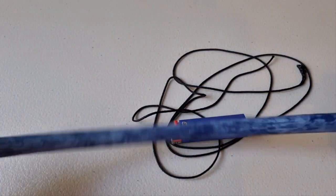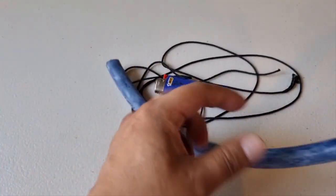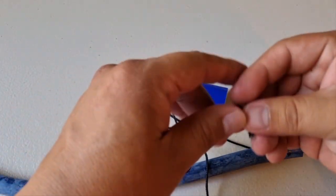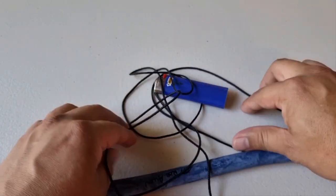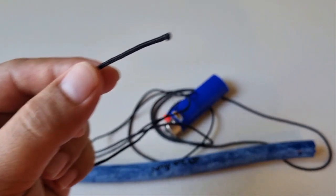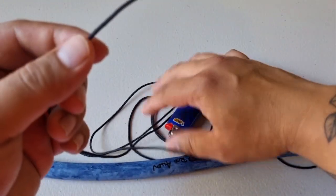Paano yung tinatawag nilang constrictor knot. So ito ay, this is a 16mm rub allen rubber. Tapos yung pantali natin, ang tawag nila dito is constrictor cord. Mura lang ito eh, I'm sure may equivalent sa atas sa Pilipinas.